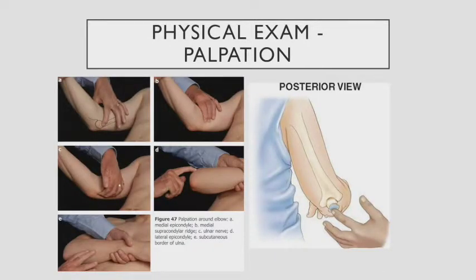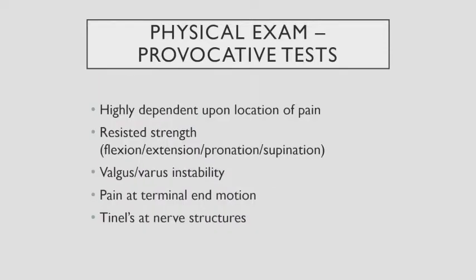We palpate the inner, outer, and posterior aspects of the elbow, isolating where they're tender. The most important part of the physical exam and history is figuring out what side or part of the elbow hurts — is it lateral, medial, posterior, or anterior? By making that distinction, you can eliminate a lot of problems. Then there are provocative tests I'll go into with each specific condition, depending on the location of the pain.